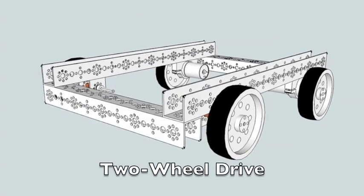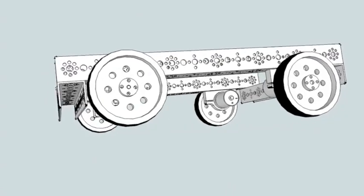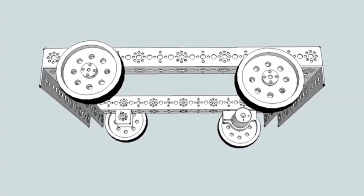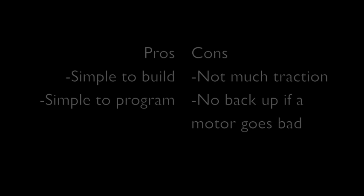The easiest probably to make is going to be a two-wheel drive chassis. It's going to have two wheels that are driven, two wheels that are not driven.